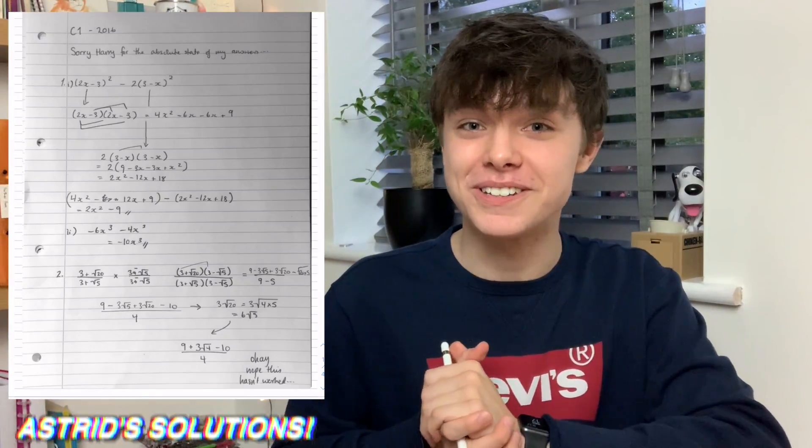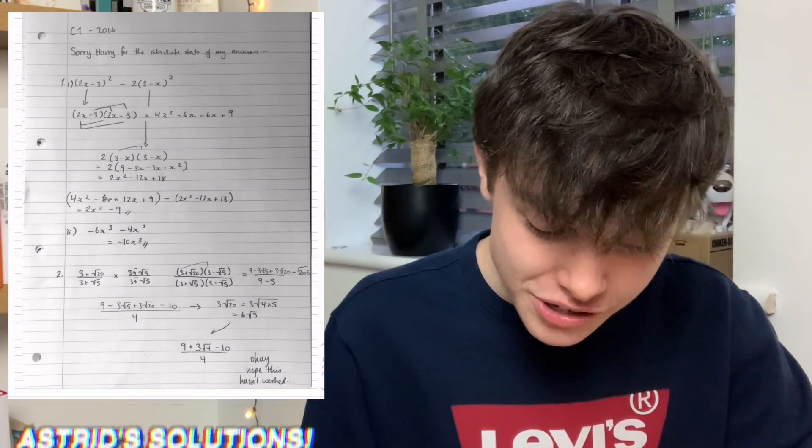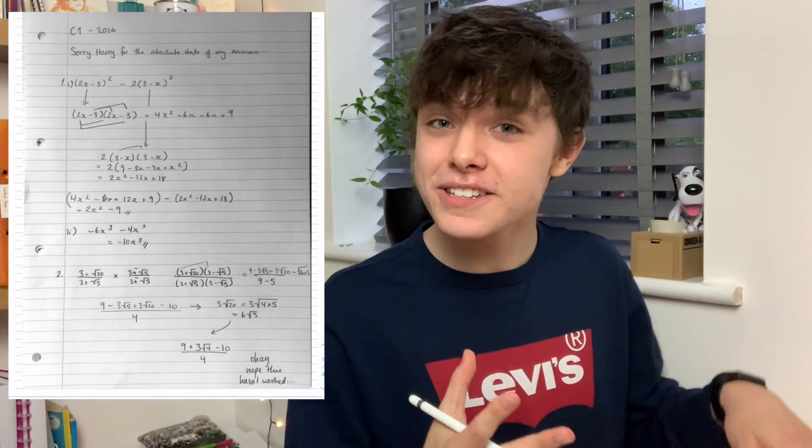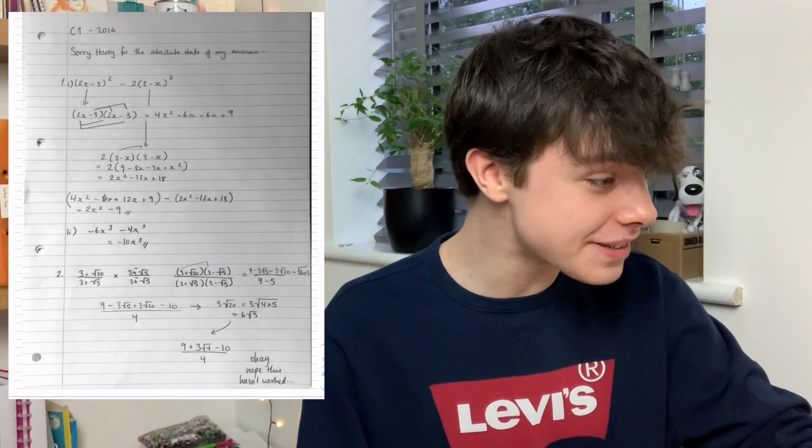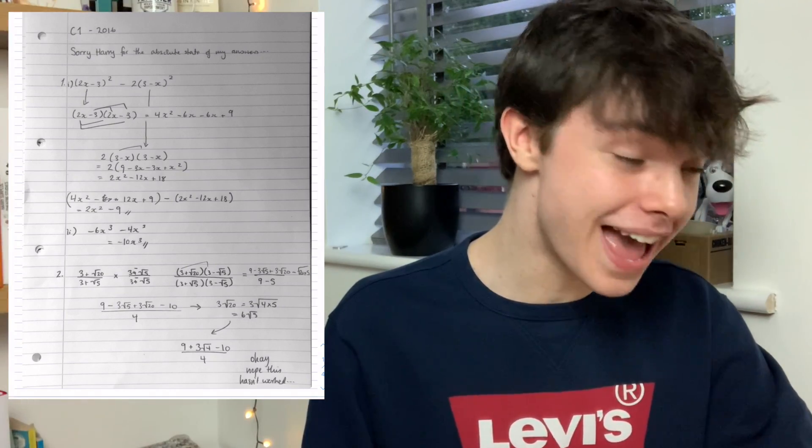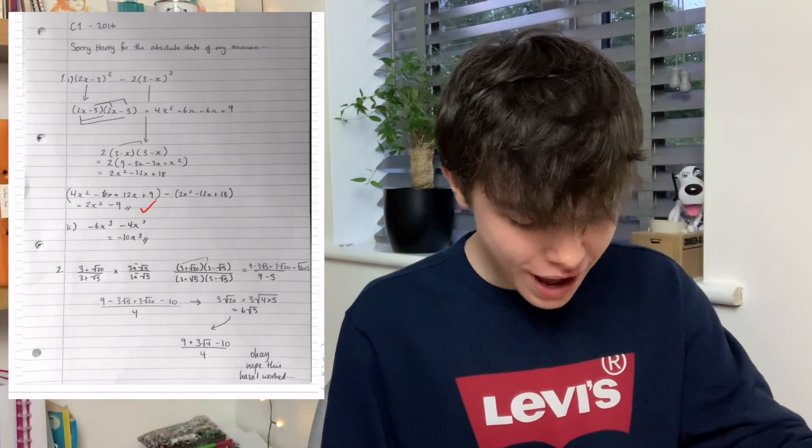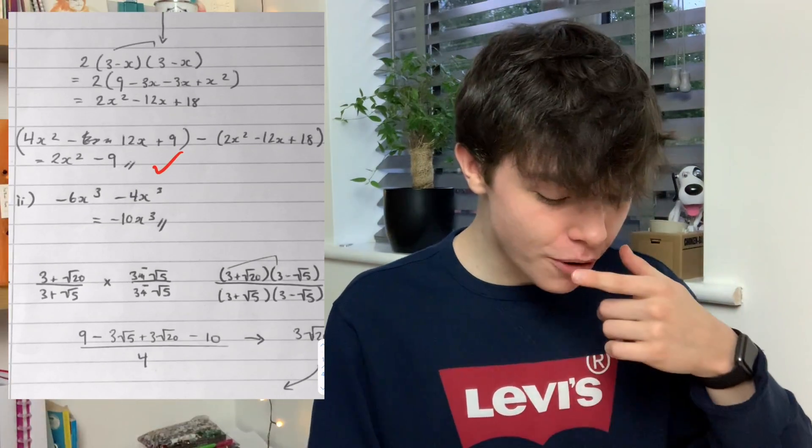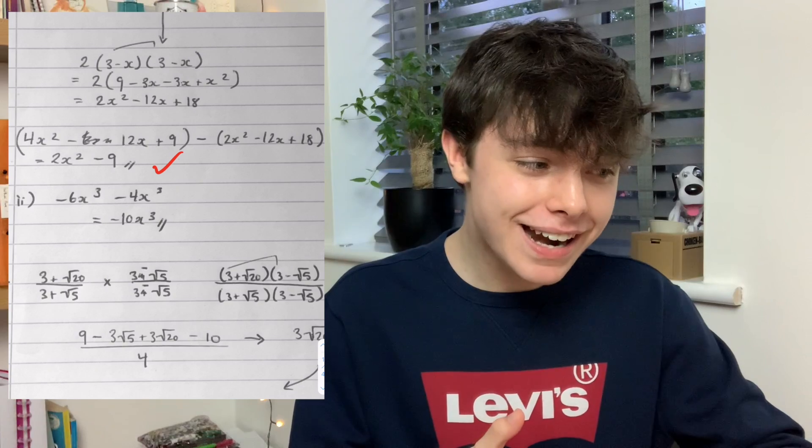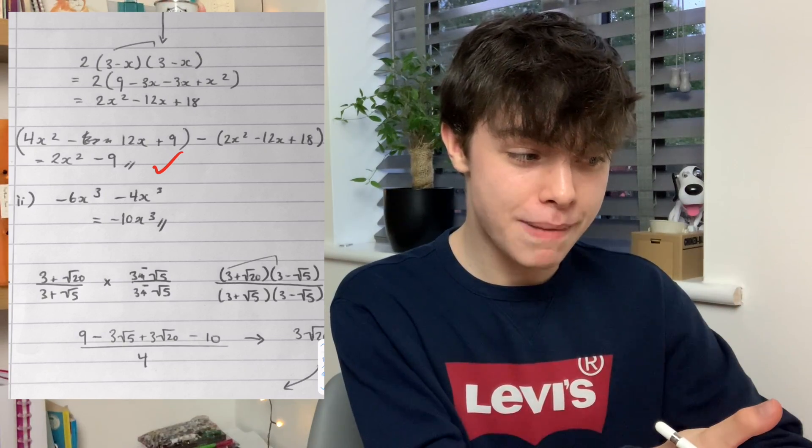So what I've got here is the mark scheme and I've done the solutions myself. On my iPad we've got Astrid's solutions and the first thing it says is sorry Harry for the absolute state of my answers. Don't worry it's fine as long as the answers are correct. The first question was expanding brackets and the correct answer is 2x squared minus 9. The next question was part of question 1 and the answer was minus 10. Astrid put minus 10x cubed. It should really be minus 10 but on the mark scheme it does say condone minus 10x cubed so we'll give you that. So you've got four marks.